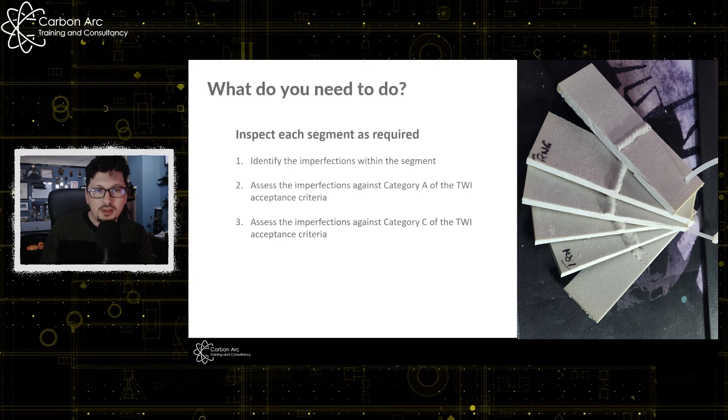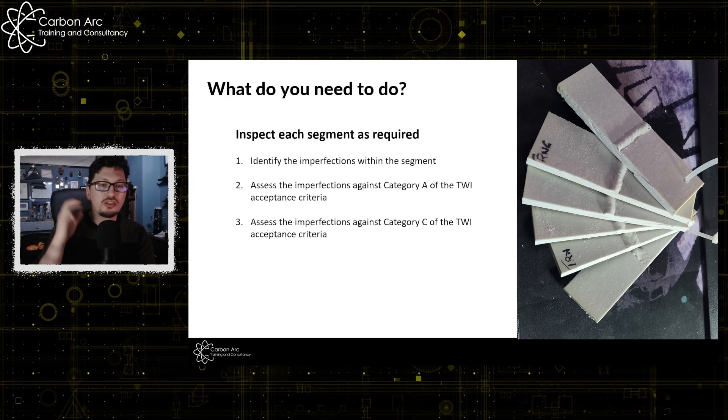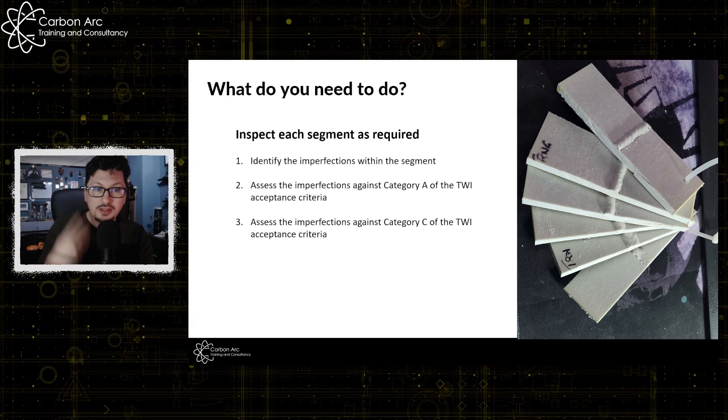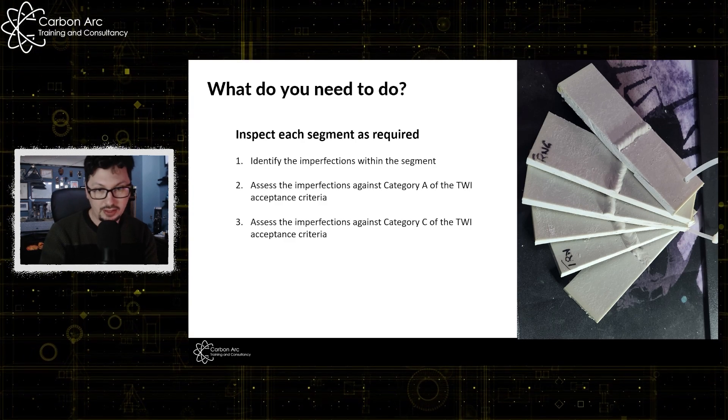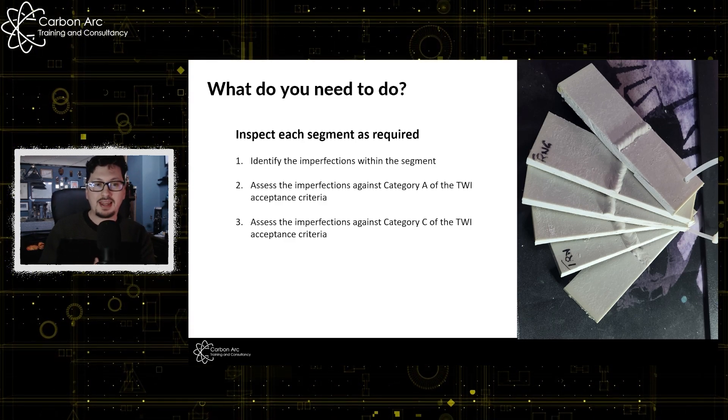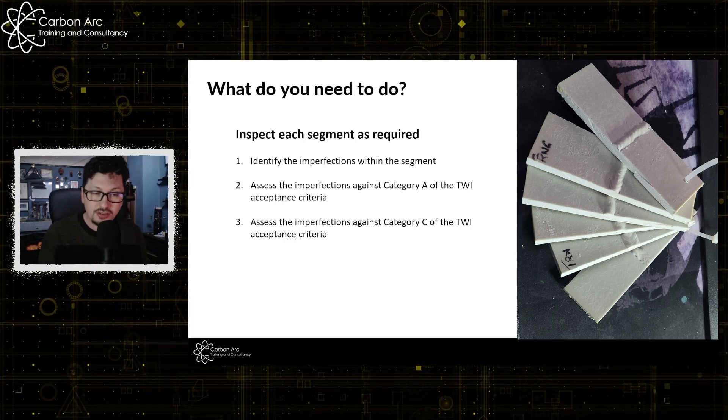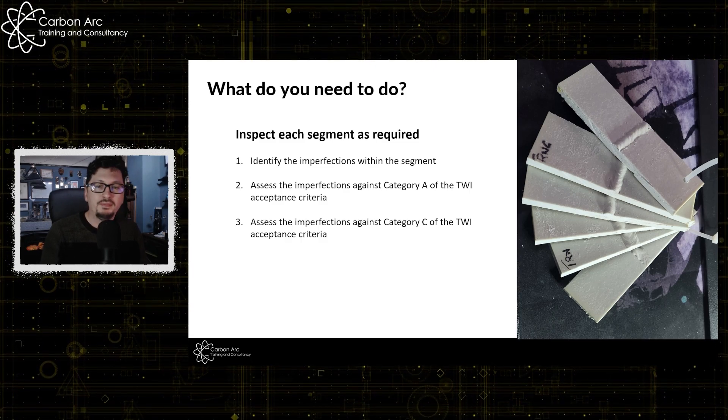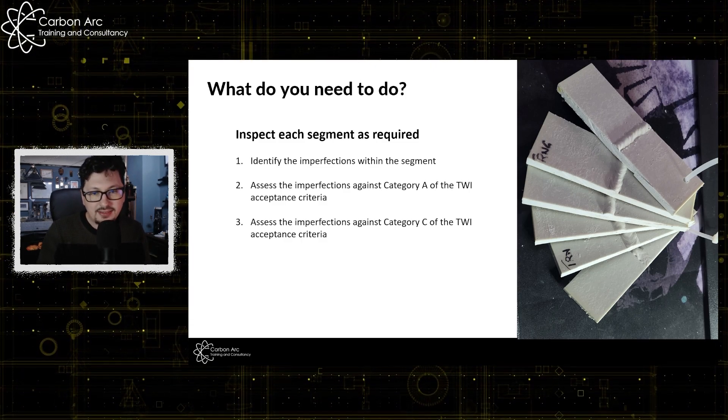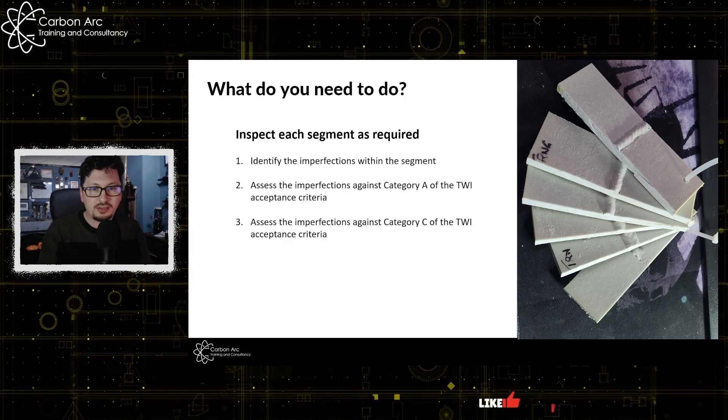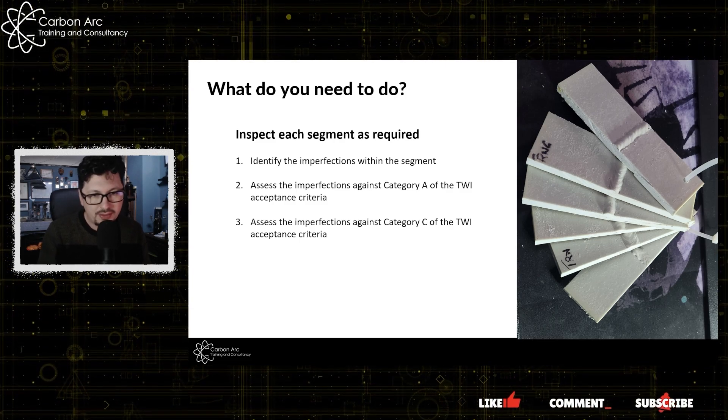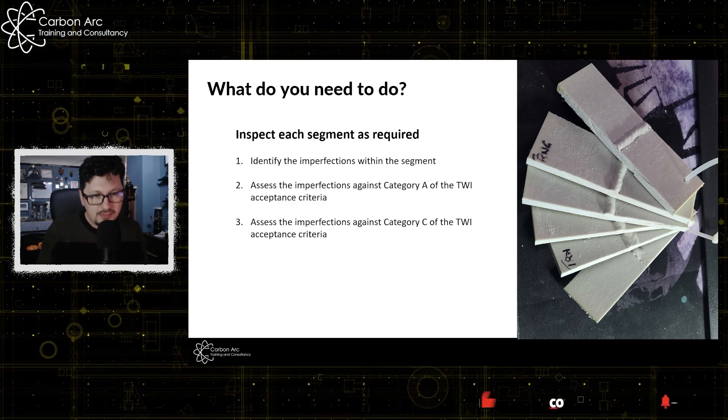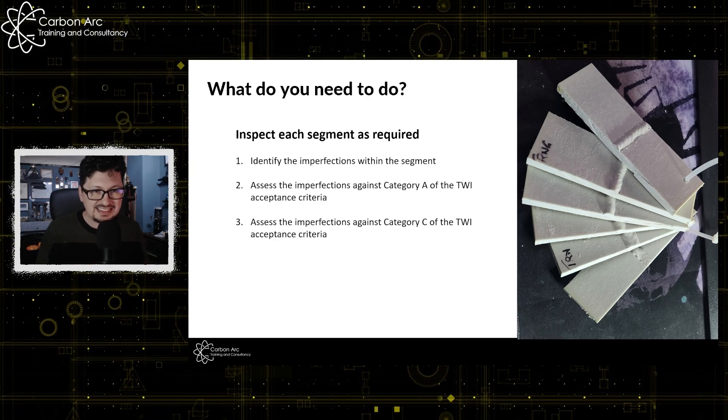The way it'll work is each segment will have three questions associated with it. First is to identify all of the imperfections that you can see within the sample. Then assess the imperfections against category A of the TWX acceptance criteria. And then do the same again, but against category C.